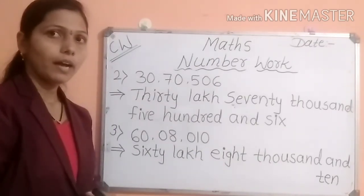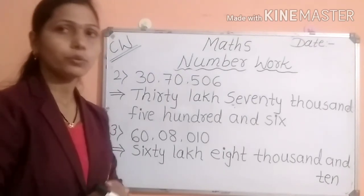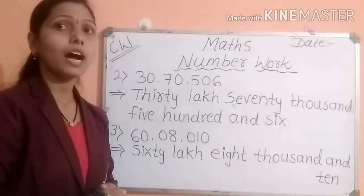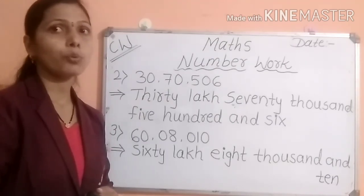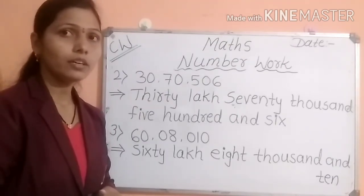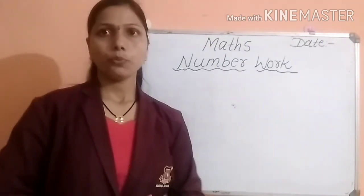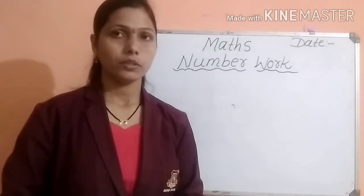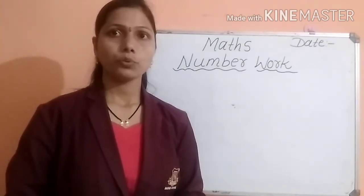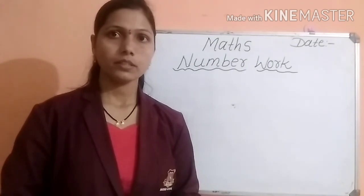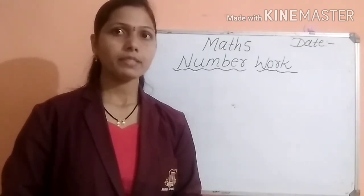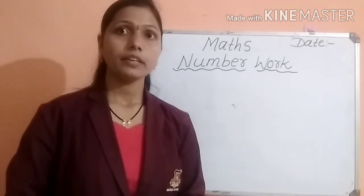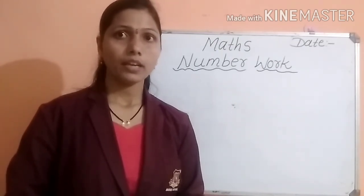Students, I hope you all have understood this concept — that is seven-digit numbers, how to read them and how to write them in words. Just now we have studied seven-digit numbers. Based on it, you have to solve some examples from problem set 4, which is given in your textbook.